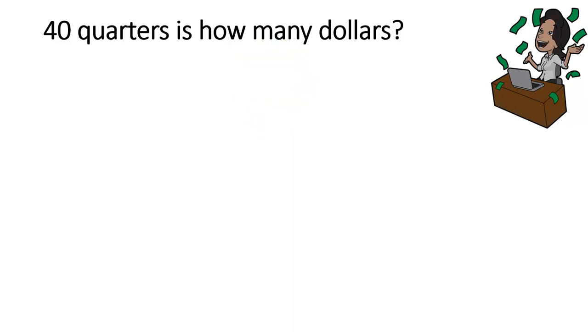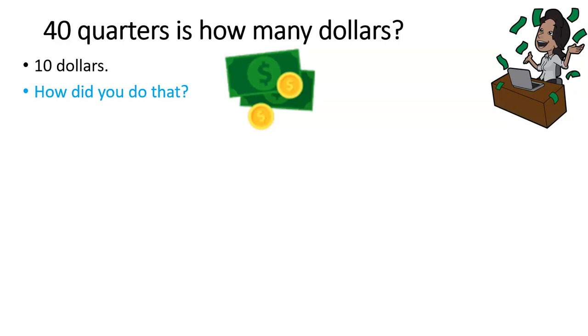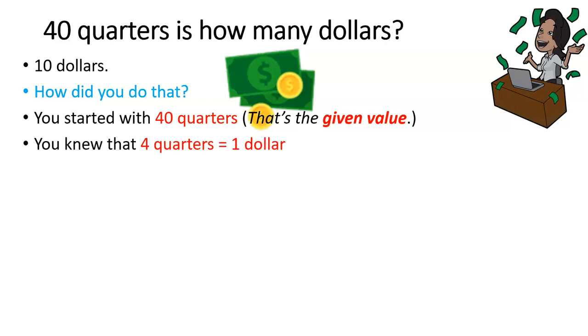So I want to compare this to a type of problem that pretty much everybody watching this would know how to do, which is say converting 40 quarters into dollars. We all know what that is, it's $10. But the question to ask is how do you get that? And most people say, well, you know, I did it in my head. What we want to do is to take the miniature little steps that we use in a problem like that and be able to apply it to any problem. So if you started with 40 quarters, we're going to call that the given value throughout the rest of the presentation here. You know that four quarters is equal to $1. That's part of how you did it. That's called a conversion factor.